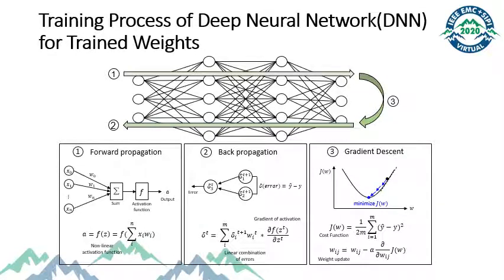This is the schematic of overall training process of deep neural network. The first step is a forward propagation that obtains the output through the activation function on the matrix product of input and weights. After getting the output of each layer, backpropagation is processed by the linear combination with the gradient of activation and errors. Finally, gradient descent is completed by weight update from the gradient of cost function.